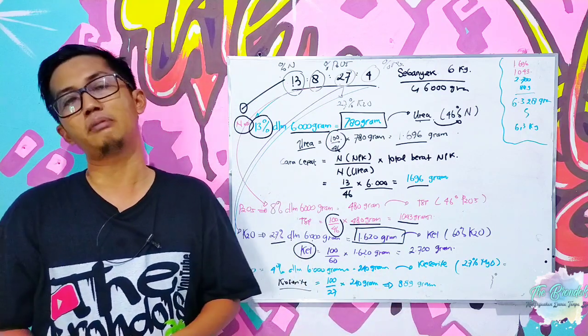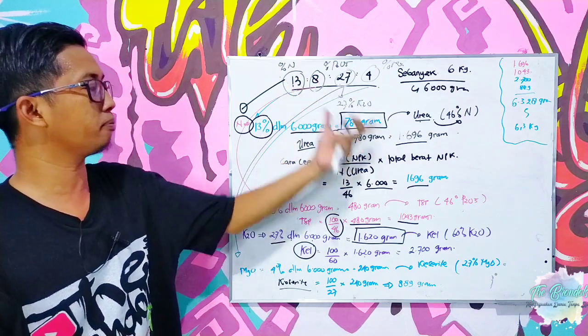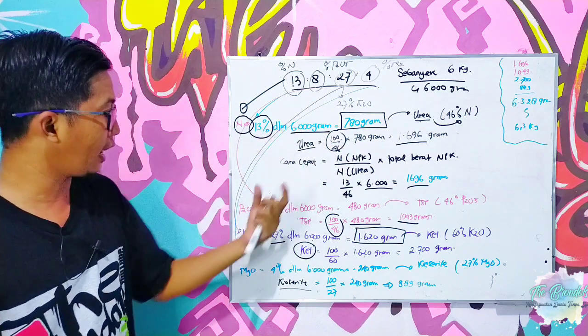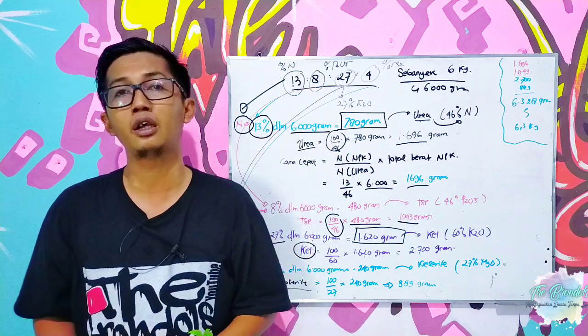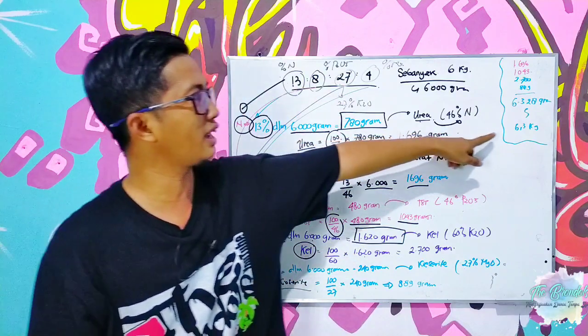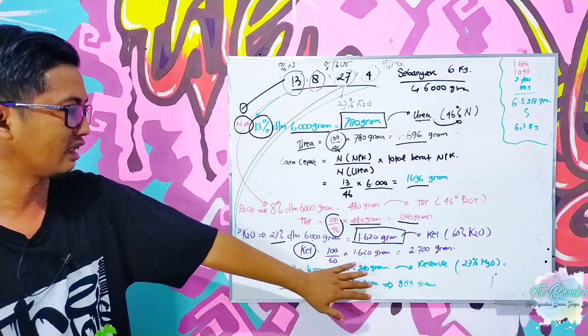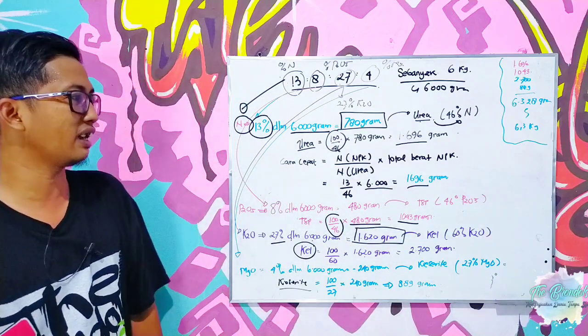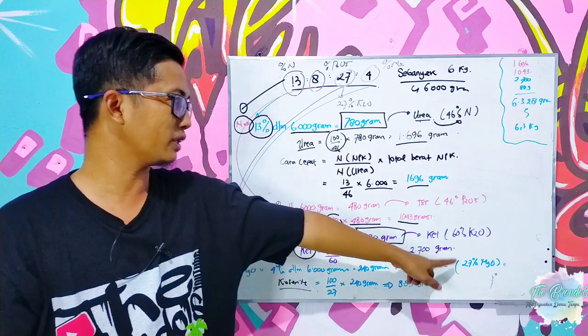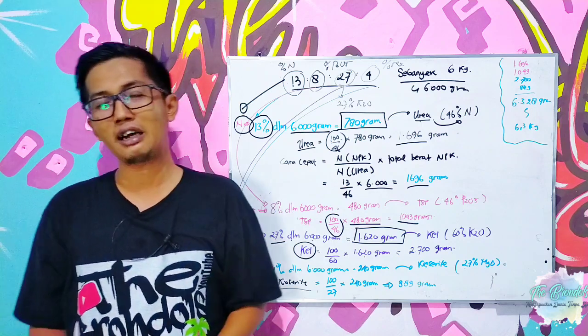Jadi inilah perhitungan ketika kita menggunakan pupuk tunggal yang setara dengan pupuk NPK yang ada. Nah setelah kita perhitungkan menggunakan urea, kemudian menggunakan TSP, menggunakan KCL, dan menggunakan kiserit, ketika kita tambahkan ternyata lebih banyak tunggalnya, karena bahwa disini sangat tergantung dari masing-masing kadarnya. Sebagai contoh kadar kiserit cuma 27%, yang tertinggi adalah kadar KCL.